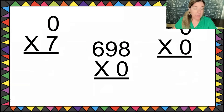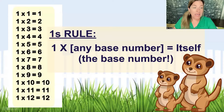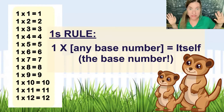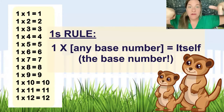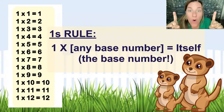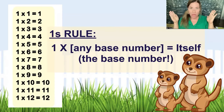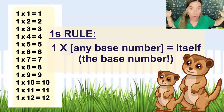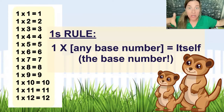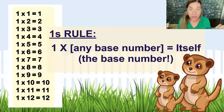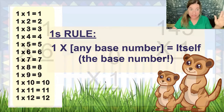Now we're going to go to the second easiest one: the ones. This is always going to be true — if you have one times any base number in the whole universe, it's going to equal the base number itself. You can multiply one times anything, any number in the whole universe. Let's look at some examples.